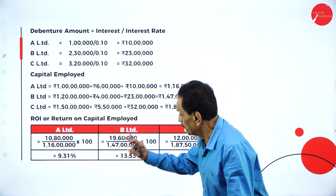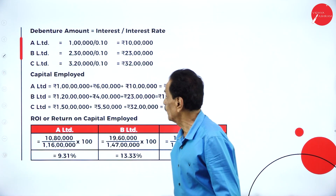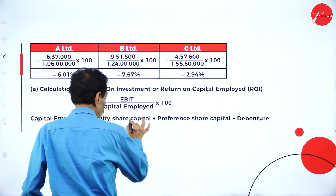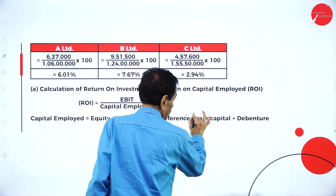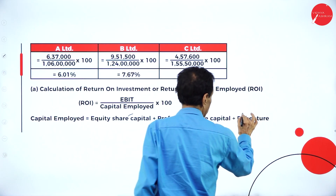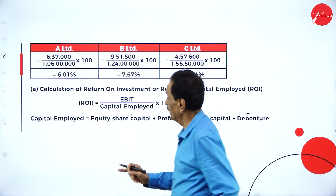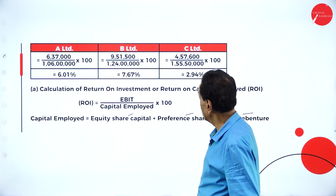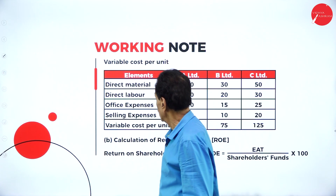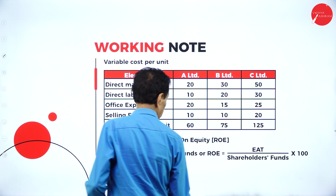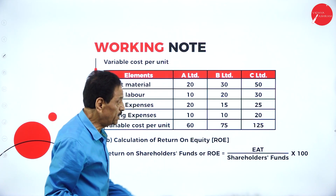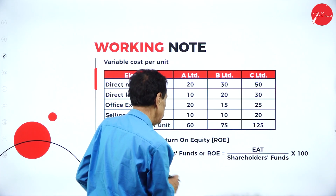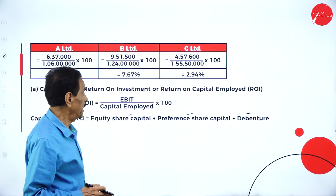Note — this is important. Capital employed includes equity share capital, preference share capital, and debenture. That is one calculation for return on investment or capital employed — EBIT divided by capital employed. The other calculation is return on shareholders fund: earning after taxation divided by shareholders fund. Shareholders fund means equity share capital plus preference share capital.